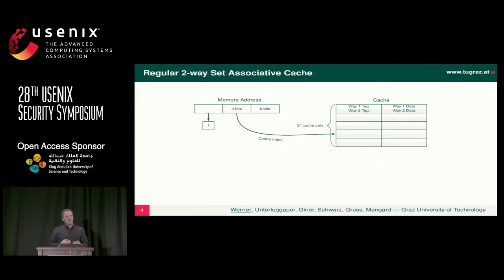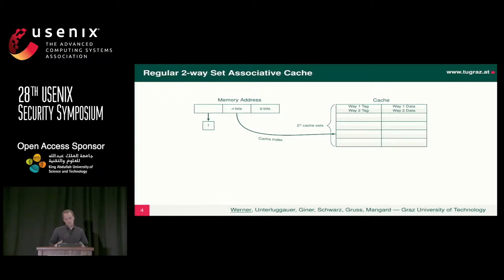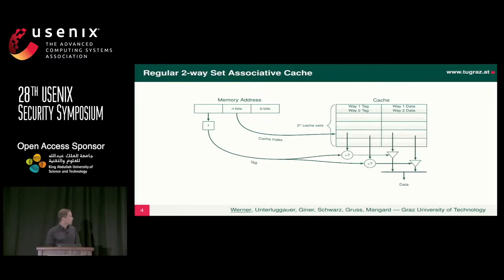When we look deeper into how modern caches work, we usually have set-associative caches, meaning that we take certain bits from our address and use those bits to determine in which entries in our cache the data can reside at all. In this specific example, we have a two-way set-associative cache, which means that as soon as we determine the cache set, there are two possibilities where we can store our data. We use the upper tag bits to determine if the data is what we want and reply with the read data.